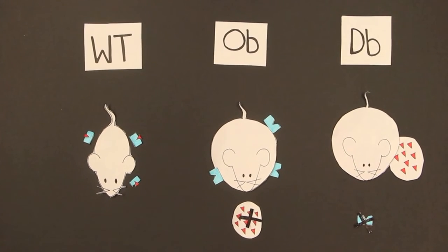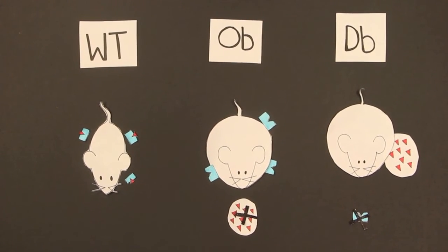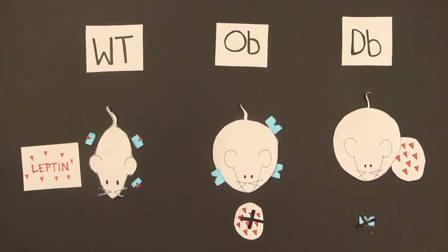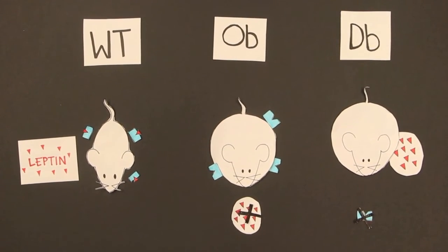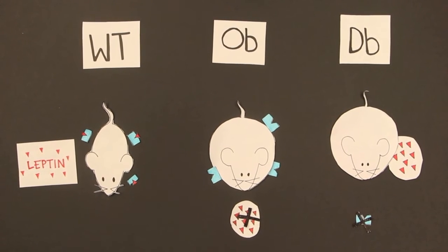The signal that tells your body that you were full and that you should stop eating is called the leptin feedback signal. Without this signal, you will continue to eat. Leptin was the protein that was the ligand in this feedback signal.